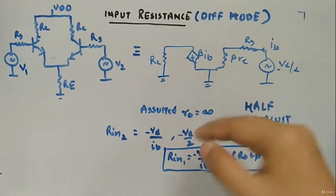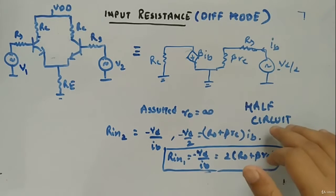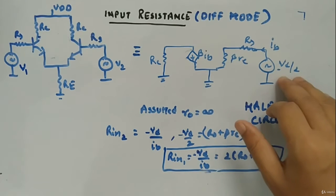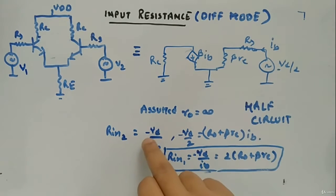Now the same input resistance you can have from this side as well, this side of the half circuit when you will apply a minus Vd by 2. So we are interested in now minus Vd by Ib, that will be our I2.